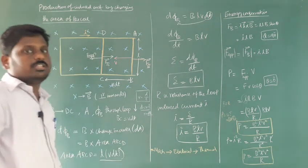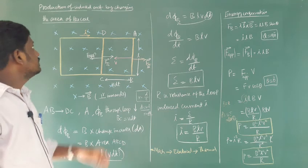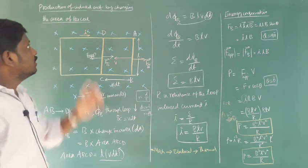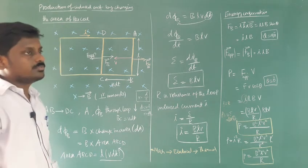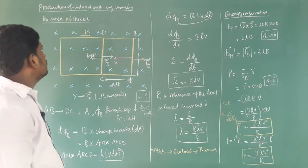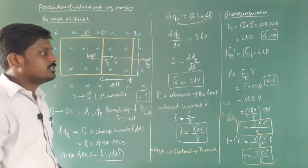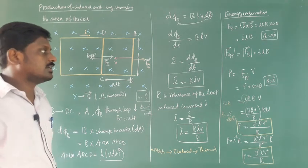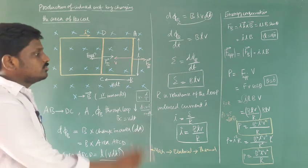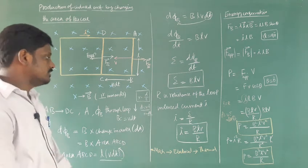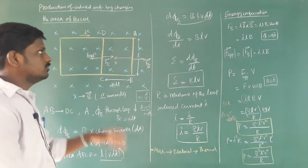So in this class we have discussed how EMF is produced by changing the area of the coil. They may ask this in five marks — it is somewhat easy, so just go through it.